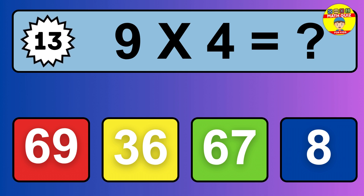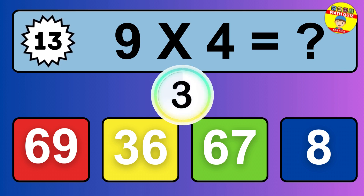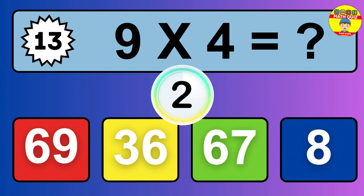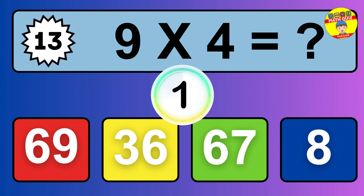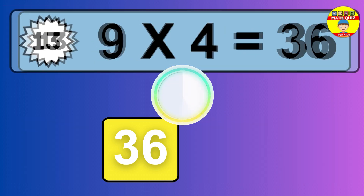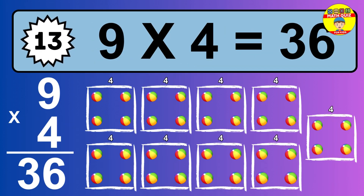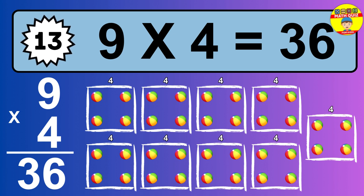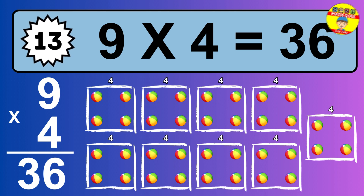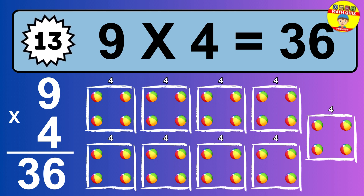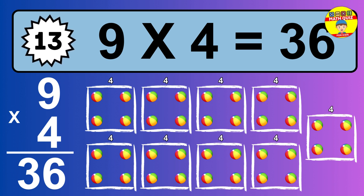Question 13. 9 times 4 equals what? The answer is 9 times 4 is 36. To calculate, we have 9 groups with 4 balls each one. So how many balls do we have? 36 balls.